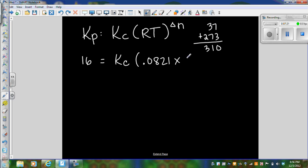Times 310. And then we need our delta n which we calculated was 1. So I am going to take these two numbers and multiply them by each other. So I am going to take my handy dandy calculator and I'm going to do 0.0821 times 310 and that is going to give me 16 equals Kc times 25.451 raised to the first power.